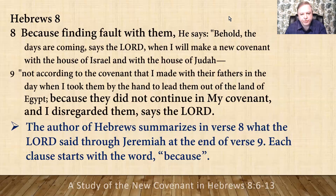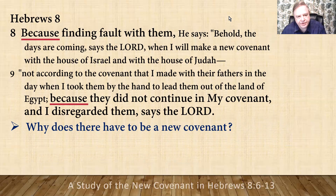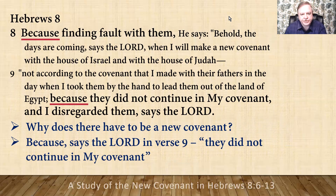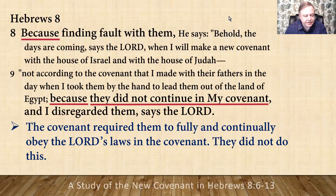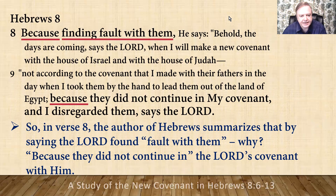The author of Hebrews summarizes in verse 8 what the Lord prophesied through Jeremiah, shown at the end of verse 9, and each clause starts with the word "because." Why does there have to be a new covenant? Because, says the Lord in verse 9, "they did not continue in my covenant." The covenant required them to fully and continually obey the Lord's laws, and they did not do this. So in verse 8, the author says the Lord found fault with them — because they did not continue in the Lord's covenant.